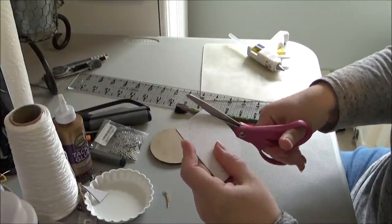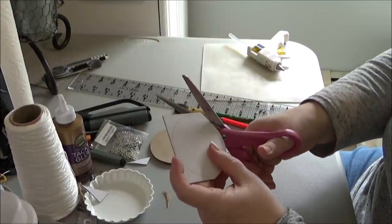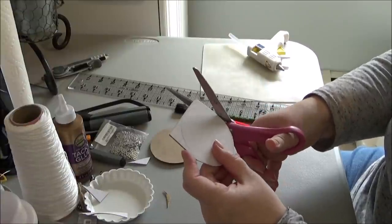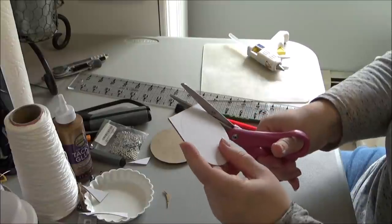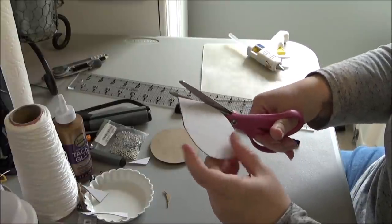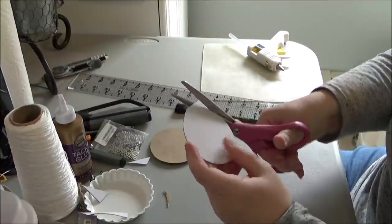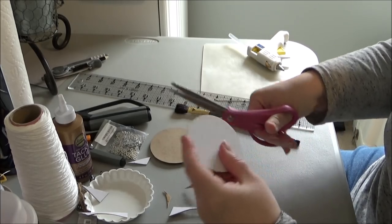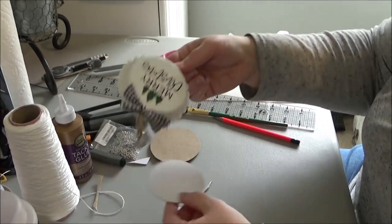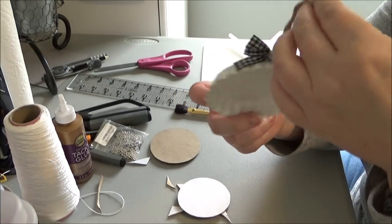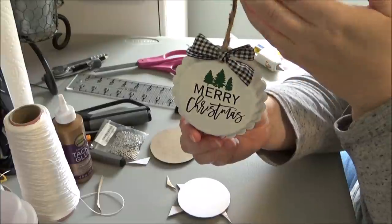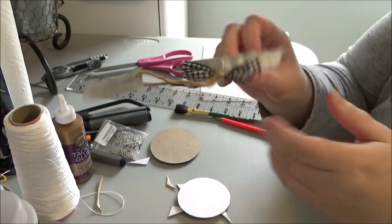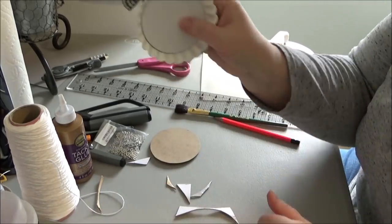I use my junk scissors to cut this out and I found that if you cut kind of cut away some of the stuff as you go, it's easier to get the scissors around there. Now, normally, I would cut two of these, one for the front and one for the back, the same size.